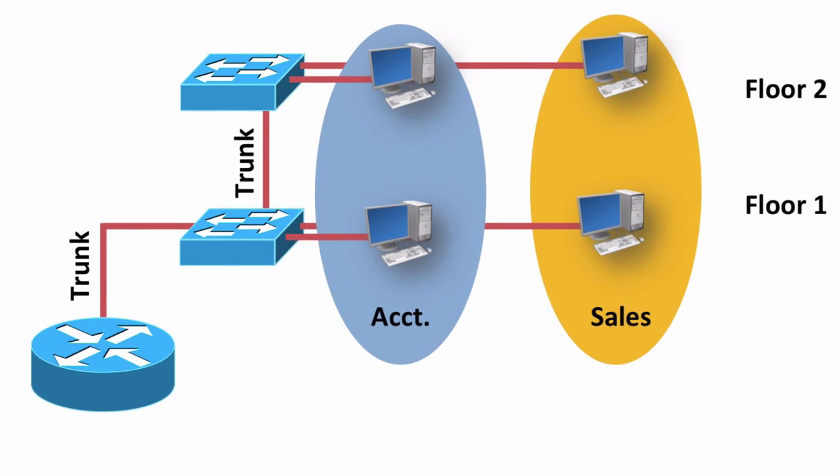By having a trunk connection between our switches and a trunk connection between the switch and the router, now we can have, if we want, just a single physical connection and it gets to carry traffic for all of the VLANs. That's a lot more efficient for us.